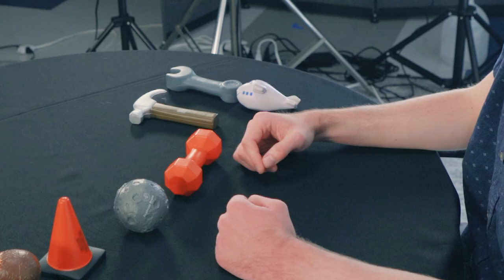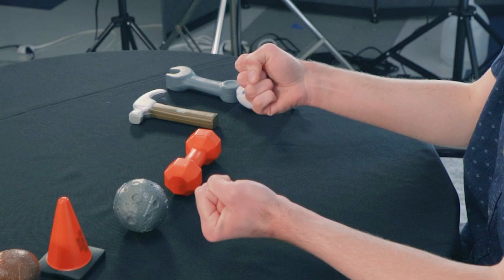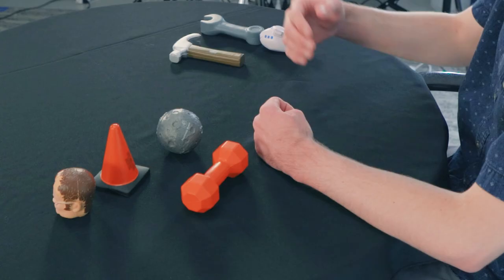Technique number one, make a fist. Now, not for shaking and saying get off my lawn. This is to improve your range of motion. Don't make your fist like this. Put your thumb on the outside like this.